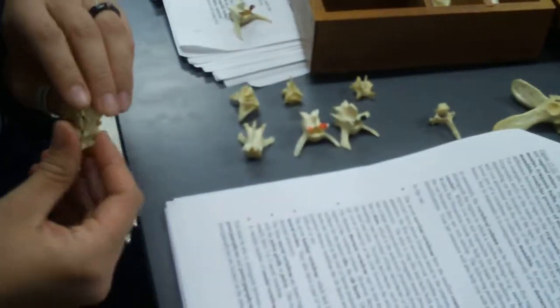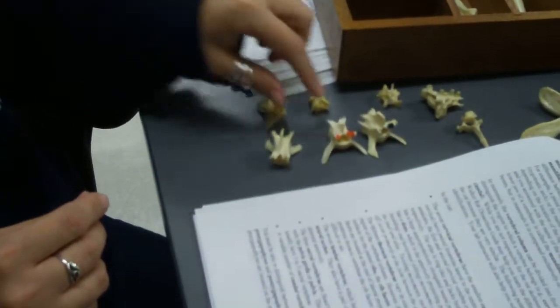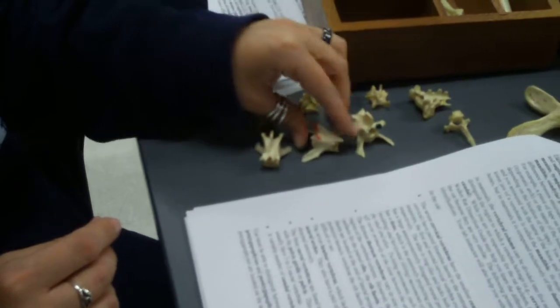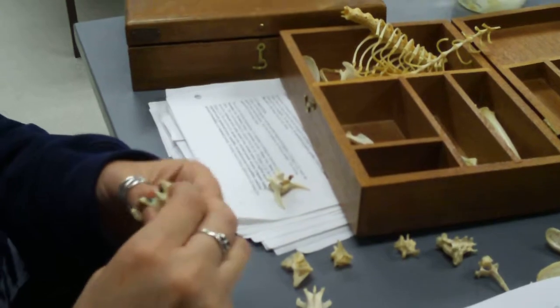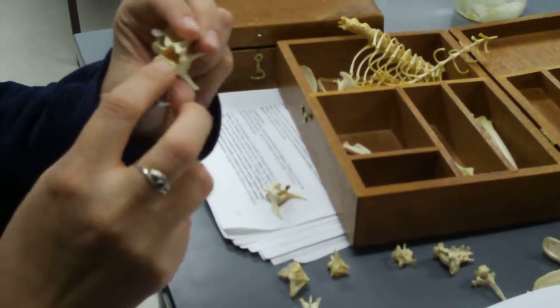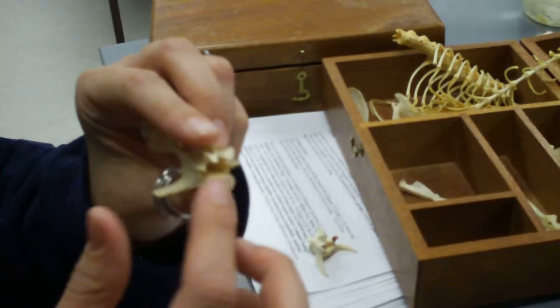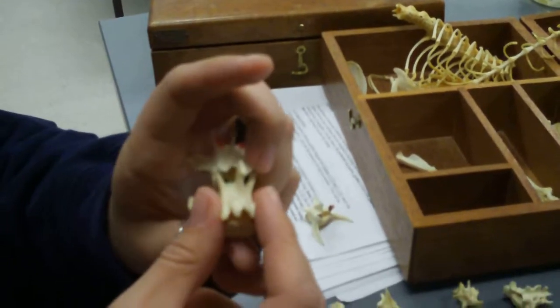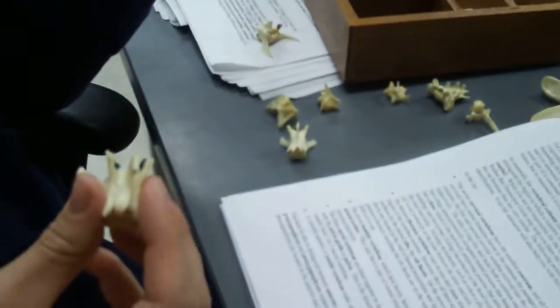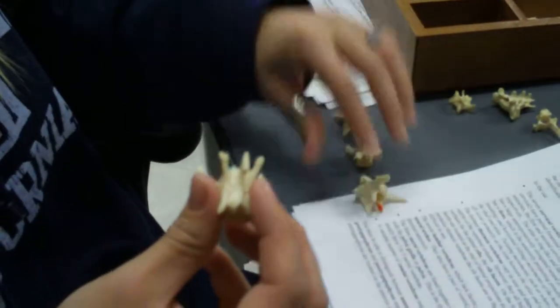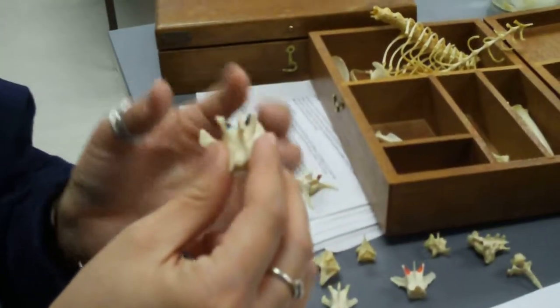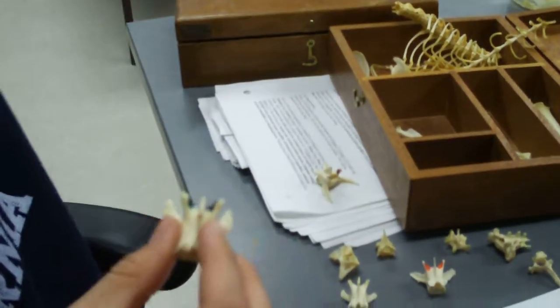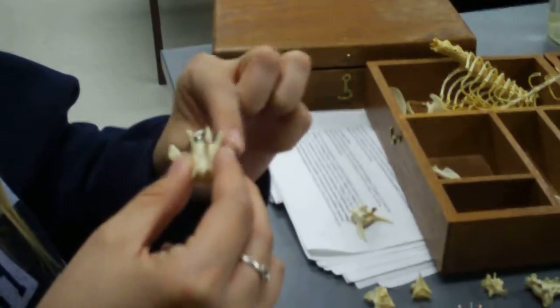Sacral vertebrae. Lumbar vertebrae. These guys are lumbar vertebrae, and they have the largest centrum, which is this big round part right here. And they also have transverse processes, which stick off and go anteriorly, so towards the head. These are the transverse processes.